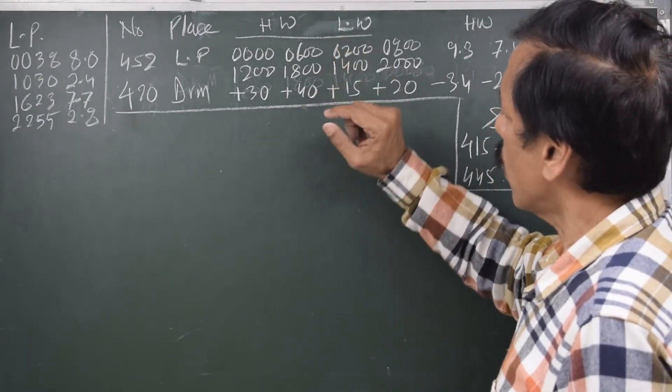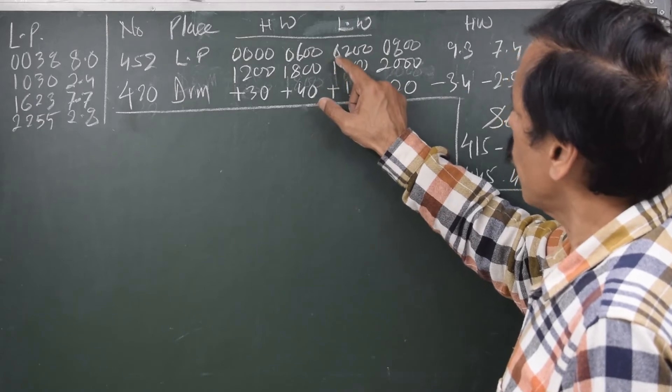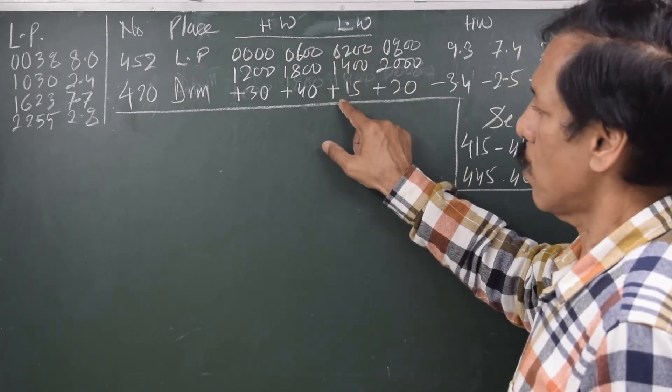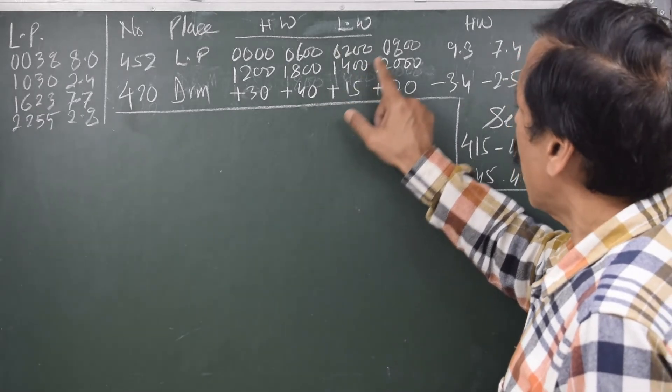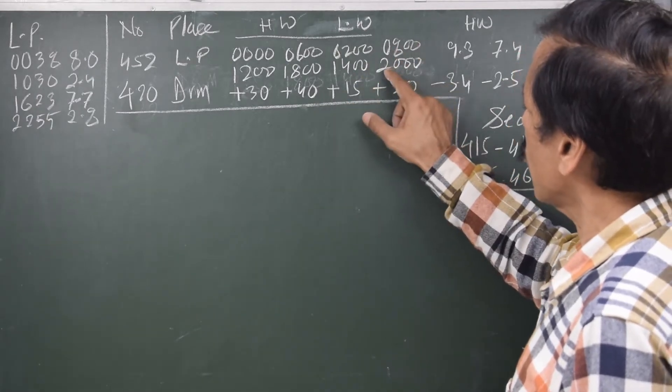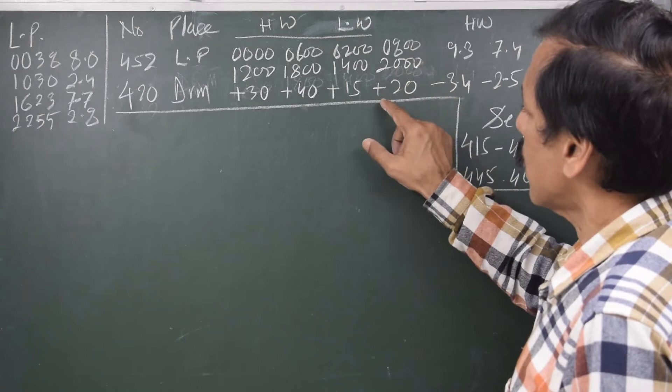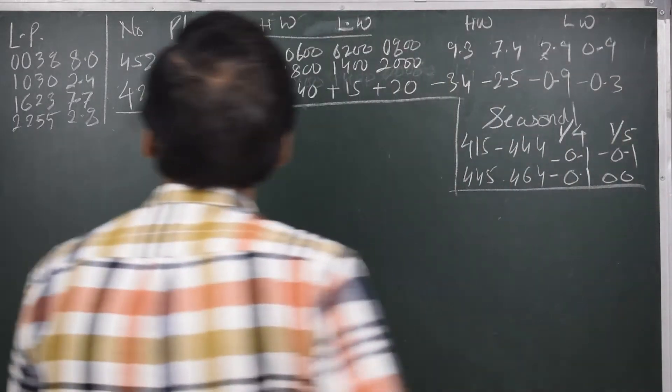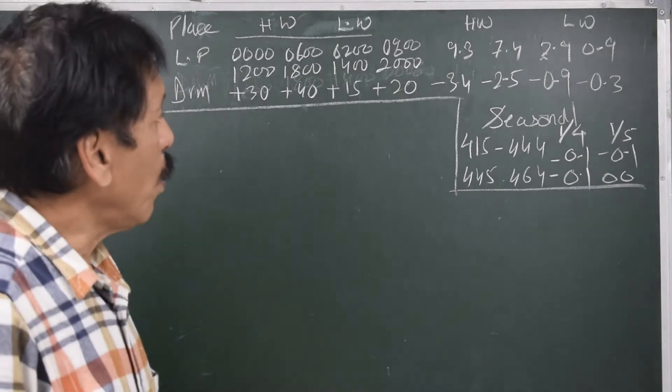Same way, if you consider the low water at Liverpool at 0200 and 1400, the time difference for Drumor is plus 15. At 0800 and 2000 the time difference for Drumor is plus 20 minutes. 452 is Liverpool and 420 is Drumor.